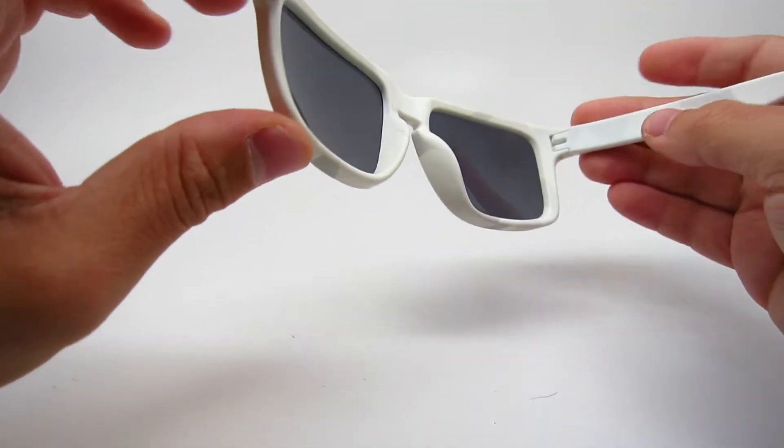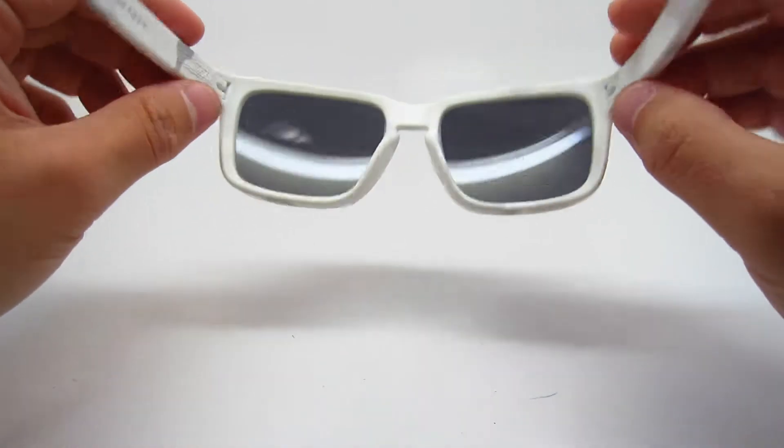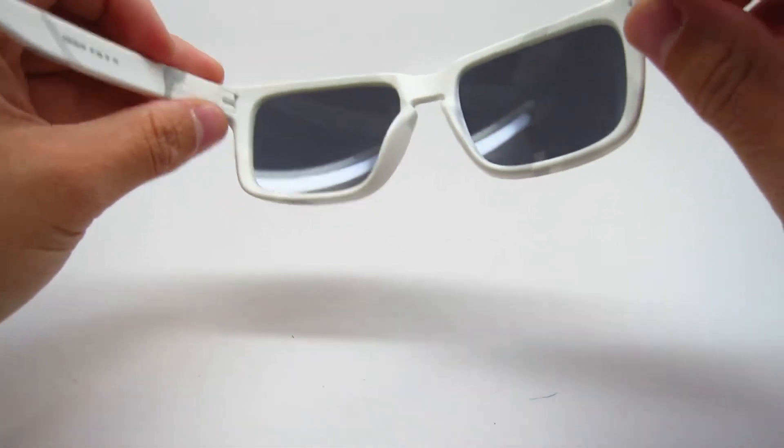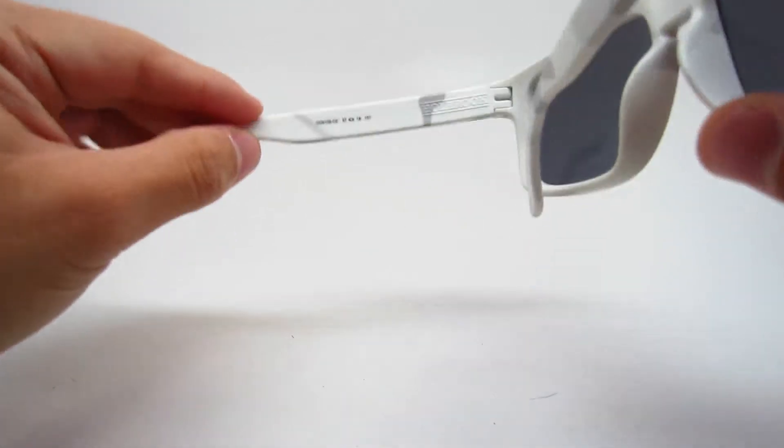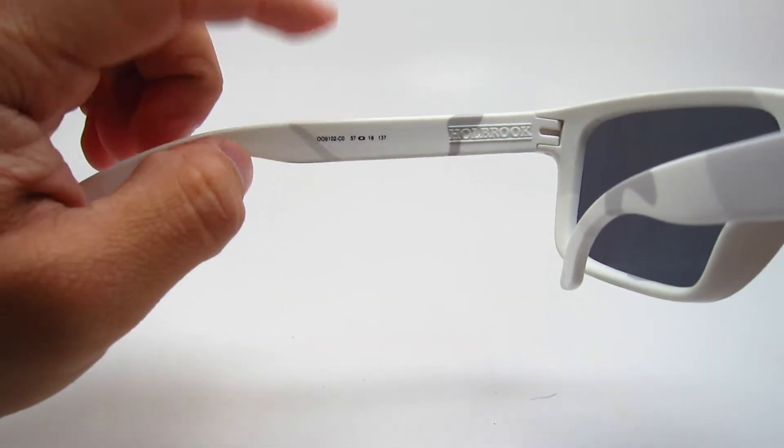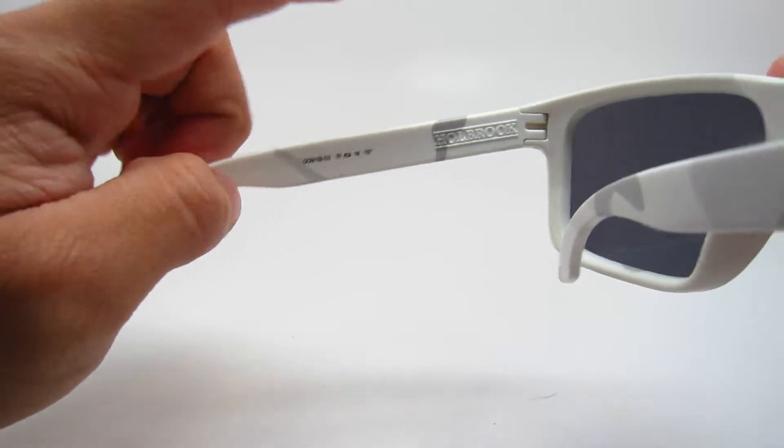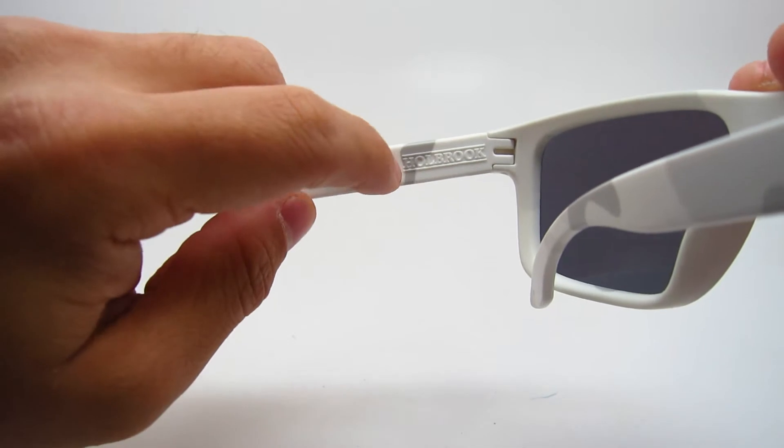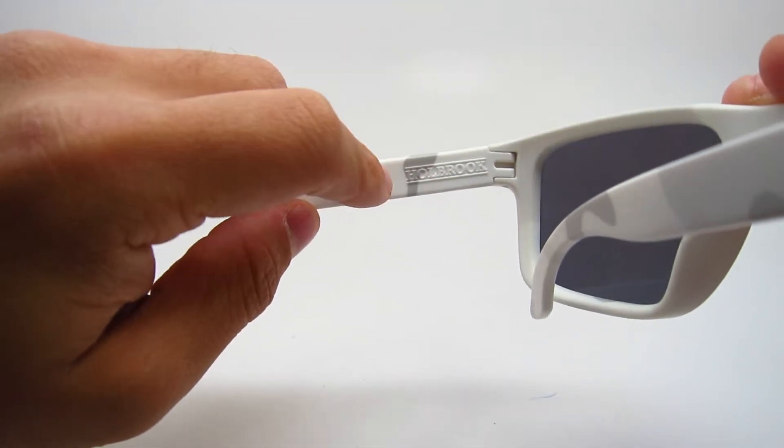So the black iridium, this is not polarized. The black iridium is basically just a very dark gray. On the sides it'll have the model number, the size, and it also has the Holbrook name imprinted on the frame.